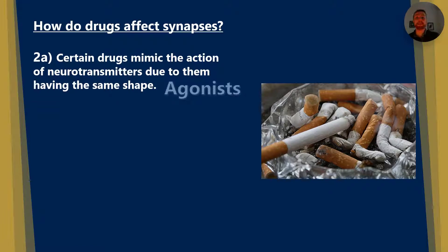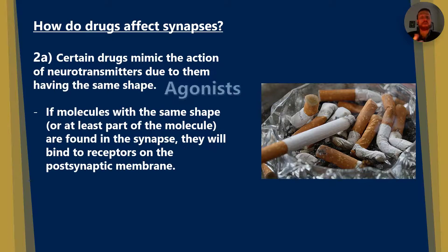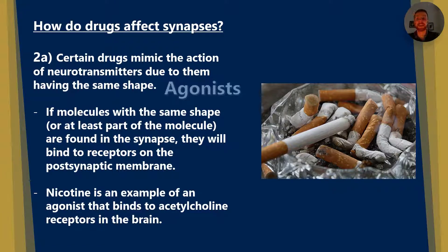Some drugs mimic the action of neurotransmitters due to them having the same shape, and we call these drugs agonists. A classic example of an agonist is nicotine, which is found in cigarette smoke. If a molecule has the same shape as a neurotransmitter and is found in a synapse, it will bind to receptors on the post-synaptic membrane and cause a response. Nicotine binds to acetylcholine receptors in the brain.